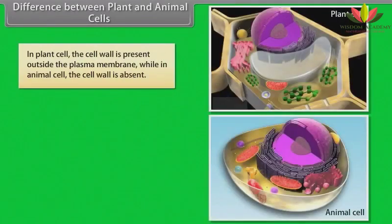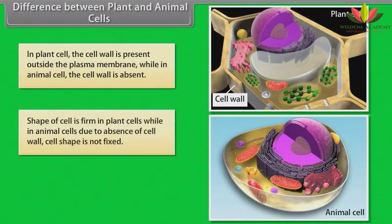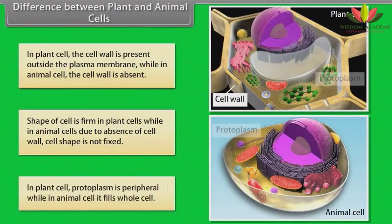In plant cells, the cell wall is present outside the plasma membrane, while in animal cells the cell wall is absent. The shape of the cell is firm in plant cells, while in animal cells, due to absence of cell wall, the cell shape is not fixed. In plant cells, protoplasm is peripheral, while in animal cells it fills the whole cell.